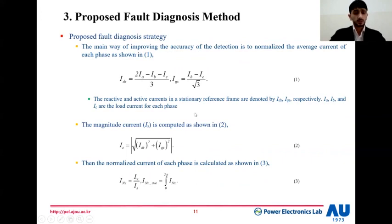In this case, we are going to calculate the normalized current. This is started by calculating the stationary current frame, I_DS and I_QS, from the three-phase current A, B, and C. This is followed by calculating the magnitude of these stationary currents, I_S, as shown in equation number two. And finally, we divide every phase current I_X, in this case X represents the phase A, B, or C, on the magnitude of the current. And then we calculate the average among the voltage.